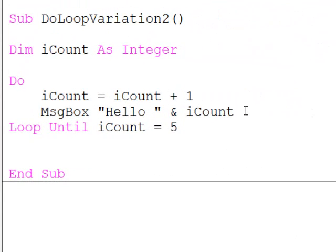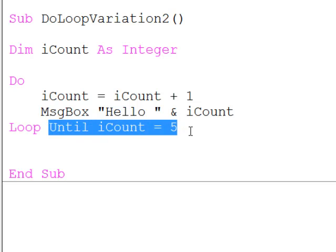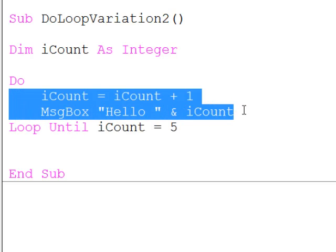This is the second variation, where we are saying loop until an exit condition is met. Now in this case, the block of code will execute at least once.